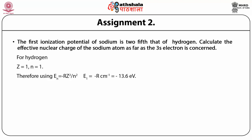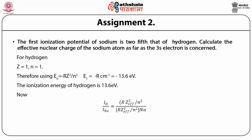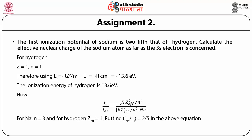Assignment 2: The first ionization potential of sodium is two-fifths that of hydrogen. Calculate the effective nuclear charge of sodium for the 3S electron. For hydrogen, Z = 1, N = 1, and E₁ = −R cm⁻¹ = −13.6 eV. Since I_Na/I_H = 2/5, using the energy level formula E_n = −RZ²/N² with N = 3 for sodium and Z_eff = 1 for hydrogen, we get Z²_eff = (2/5) × (9/1) = 3.6, so Z_eff for sodium is approximately √1.897 ≈ 1.377.